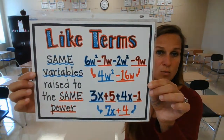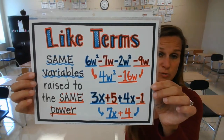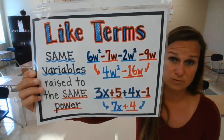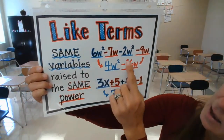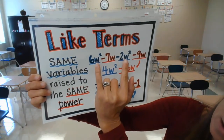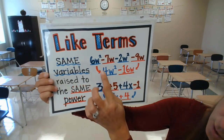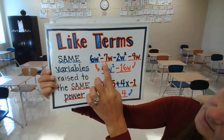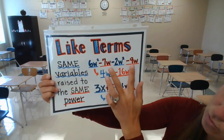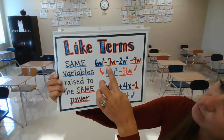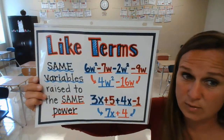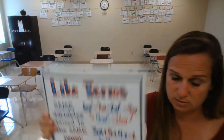One more vocabulary reminder before we begin the lesson is like terms. Like terms must have the same variable raised to the same power. When adding and subtracting polynomials, we can only combine like terms. For example, 6w squared and negative 2w squared are like terms because they have the same variable, w, raised to the same power, 2 — so 6 minus 2 gives us 4w squared. Negative 7w minus 9w are also like terms, both raised to the first power, giving us negative 16w. We combine the coefficients and keep the variable and exponent.